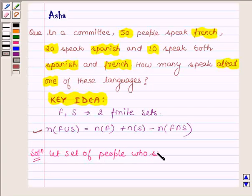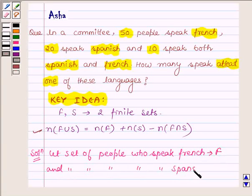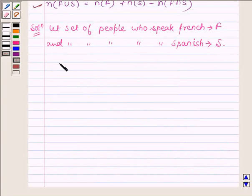Let us now start with the solution. Let the set of people who speak French be denoted by F and the set of people who speak Spanish be denoted by S.